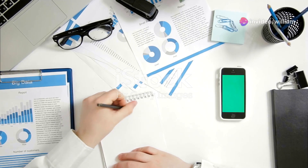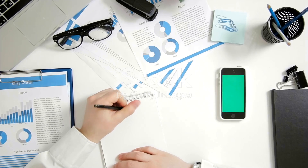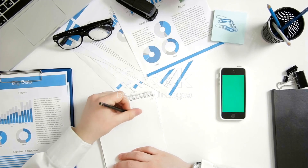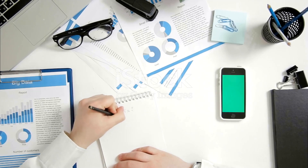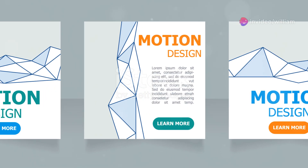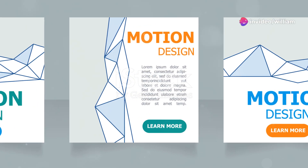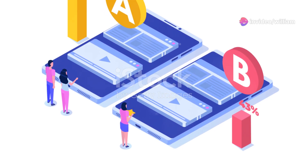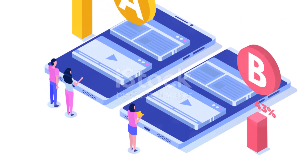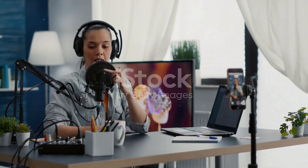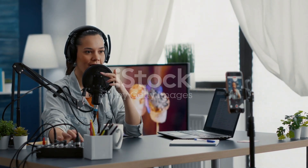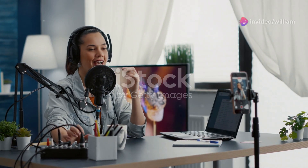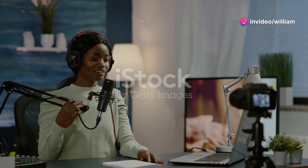Experiment with different types of content to see what resonates most with your audience. Your analytics can guide you in choosing the right topics and formats. For example, if you see a high click-through rate on a particular thumbnail style, use similar designs for future videos. Consistency in your visual branding can help build recognition and trust. Test what works and focus on producing more of what your audience loves, identifying your top-performing videos and creating more content in that vein.